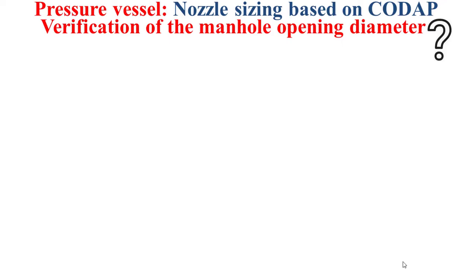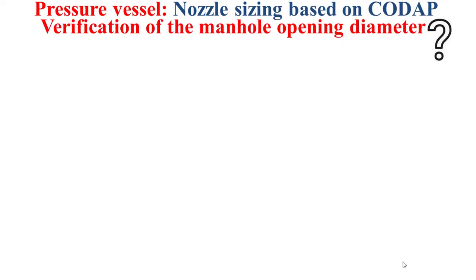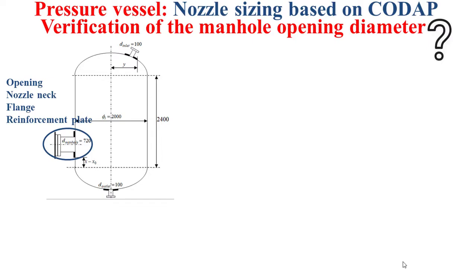I start with the verification of the opening diameter. I have my pressure vessel and this main hole can be simply seen as an opening plus a nozzle neck plus a flange plus a reinforcement plate. In this video, I will handle the opening, the nozzle neck, and the flange.